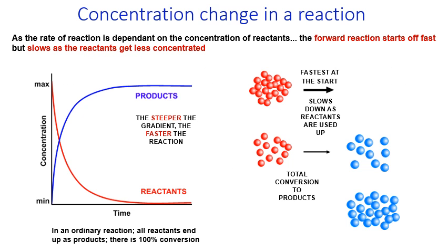Looking at concentration change in a reaction: as the rate of reaction is dependent on the concentration of reactants, the forward reaction starts off very quickly because there are lots of reactants, then slows as reactants become products and become less concentrated — less chance of successful collisions. So it's fast at the start and slow at the end. In an ordinary reaction, all reactants end up as products and there is 100% conversion.